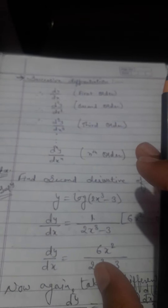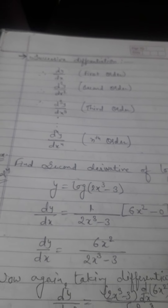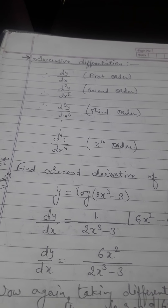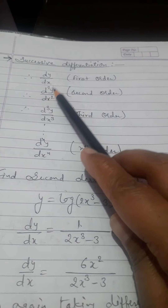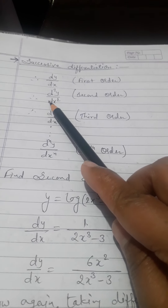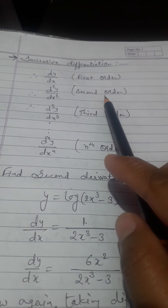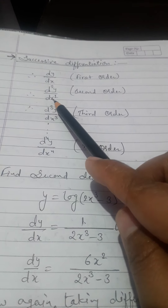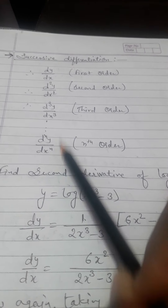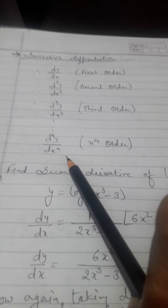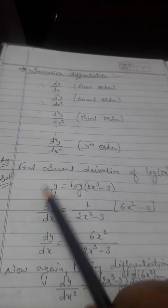Now we have the topic of successive differentiation. If we are taking differentiation one time, this is called first order differentiation. If we are taking differentiation two times, this is called second order, denoted by d²y/dx². Differentiation of third order is d³y/dx³. Similarly, nth order is dⁿy/dxⁿ.